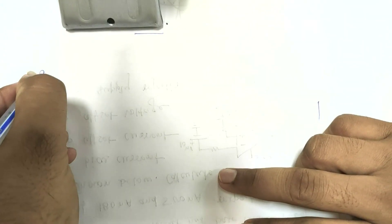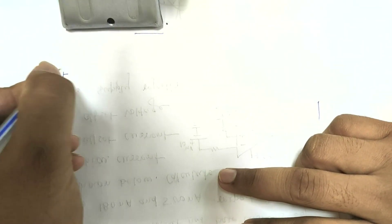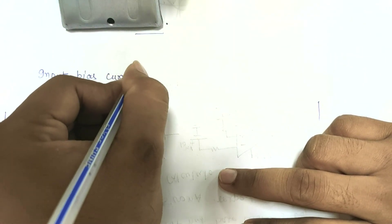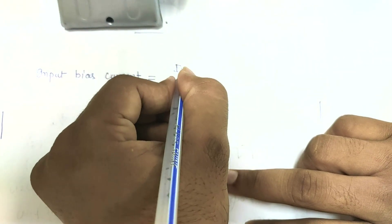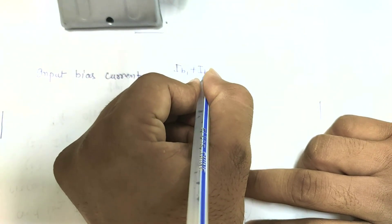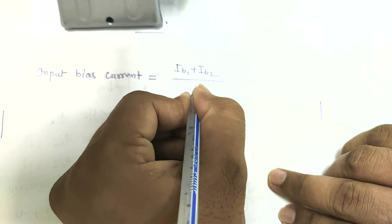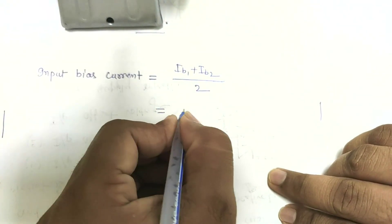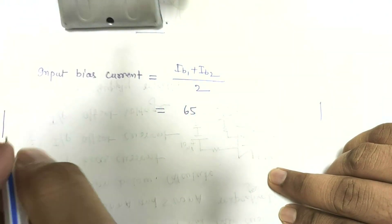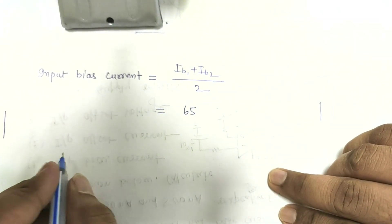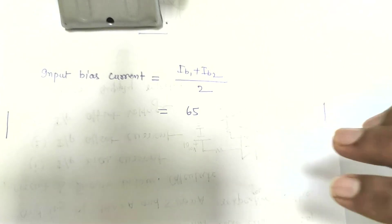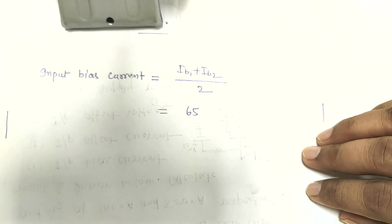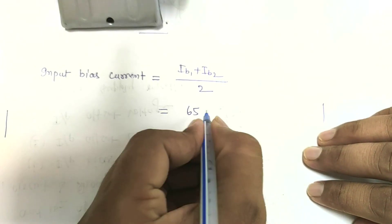Input bias current is equal to (Ib1 + Ib2) divided by 2. Therefore, (180 + 500) divided by 2 gives 65 nanoampere.